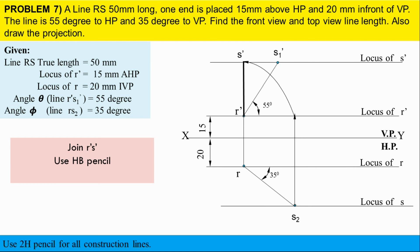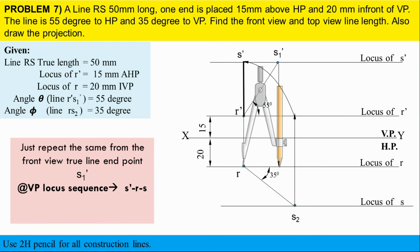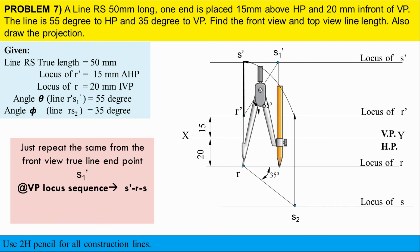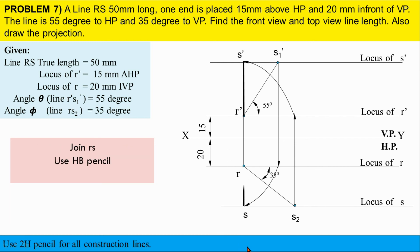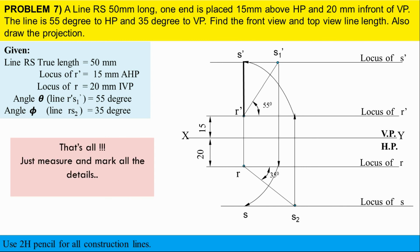For the top view, the locus sequence is S dash to R dash (perpendicular line), then R dash to S (arc). From point S1 dash, draw a perpendicular line up to the locus of R. With R as center, make an arc. You will get point S directly below point R. Connect them with HB pencil. This is the final top view.